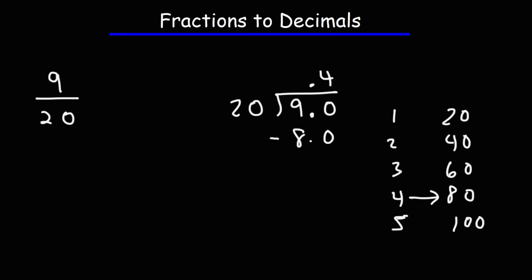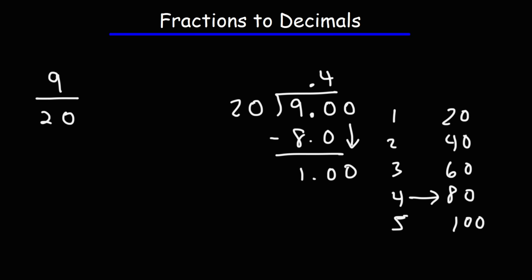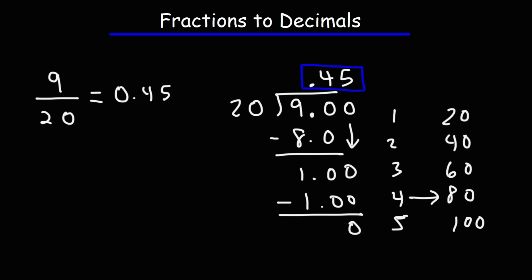Let's not forget the decimal point. 90 minus 80 is 10, or 9 minus 8 is 1. Now we're going to treat this as if it's 10. How many times does 20 go into 10? It doesn't, so we need to add another 0. So now we're going to treat this as if it's 100. 20 goes into 100 five times. So our final answer is 0.45 — 9 over 20 is equal to 0.45 as a decimal.